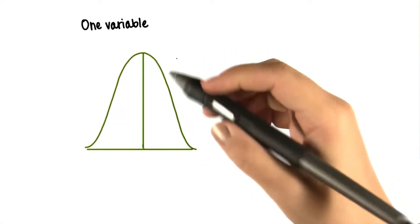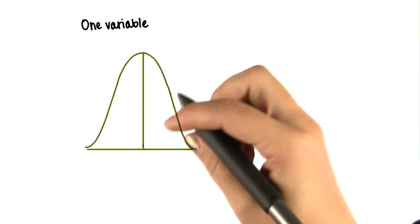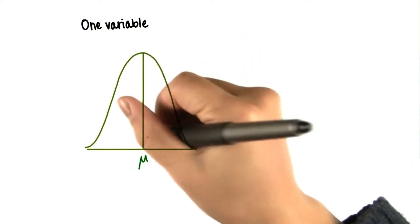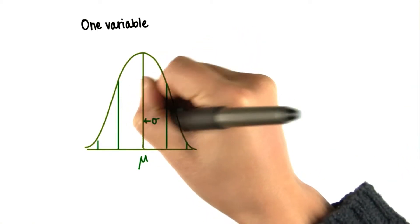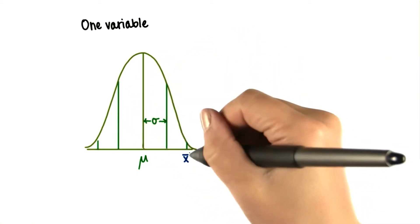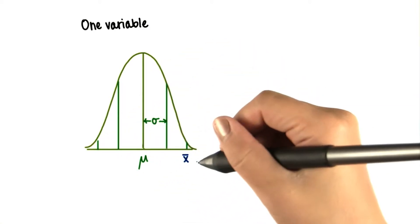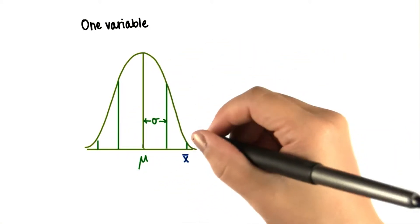Welcome back. Up to this point, we've really only been working with one variable, analyzing the mean and the standard deviation, and seeing where a sample mean falls on this distribution and if that's typical or not so typical.